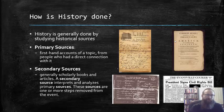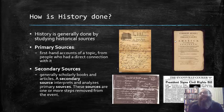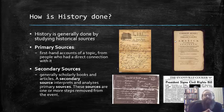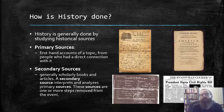Secondary sources are generally scholarly books and articles. A secondary source interprets and analyzes primary sources and is one or more steps removed from the event in question. A great example of a secondary source would be your textbook, and another example would be the scholarly work you will be asked to read as part of the movie-book project, which is the major writing assignment in this course.